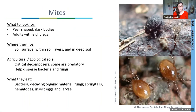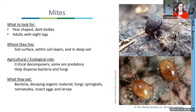The first arthropod group is one of the most abundant — mites. These are tiny pear-shaped animals, mostly with dark bodies; adults have eight legs. They're visible with the naked eye but quite tiny, and are among the most diverse and abundant groups in soil. The oribatid mites are super decomposers, critical for breaking down organic material into bits that bacteria will use. The mesostigmata mites are predatory, feeding on smaller life.